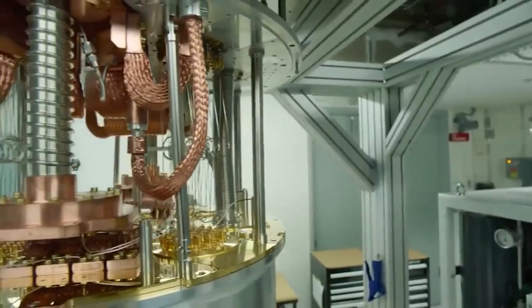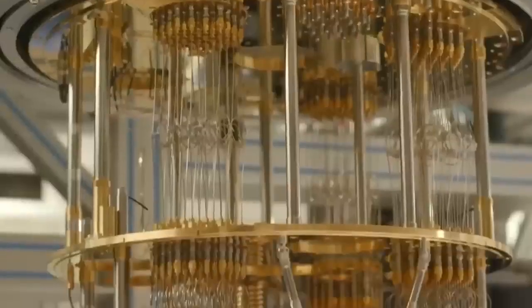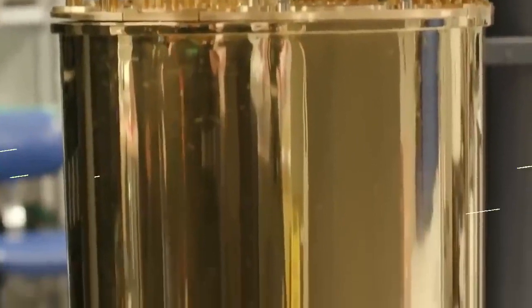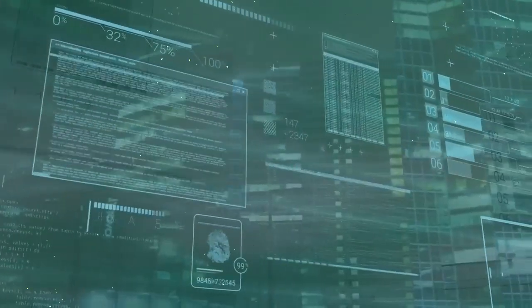So how do we use these principles to build a quantum computer? Well, the key is to use them to perform operations on qubits that are impossible with classical bits. For example, a quantum computer can use superposition and entanglement to perform many calculations at the same time, which can lead to massive speed-ups for certain types of problems.